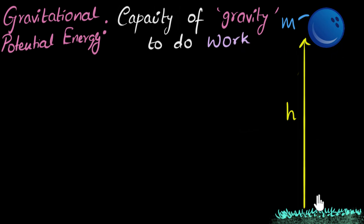So over here, if gravity can do let's say 100 joules of work in moving that ball down, then we will say gravitational potential energy is 100 joules. If gravity can do only 2 joules of work, then we will say its potential energy is only 2 joules.